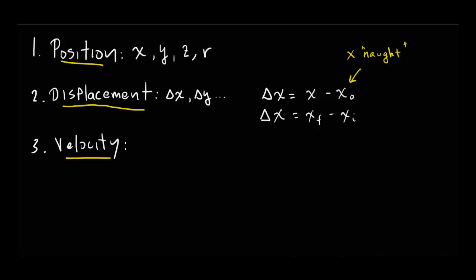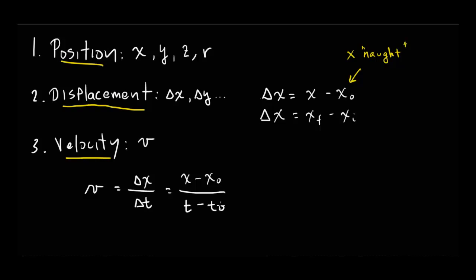Velocity is similar to speed, but again direction is relevant. If I went one mile east and one mile west, my displacement is zero, so my velocity would be zero. Velocity, abbreviated V, is defined as the change in position delta x over the change in time delta t. We could rewrite that as x minus x-naught divided by t minus t-naught. This is the first equation of significance, so I'll put a box around it — we'll use this equation quite a bit.